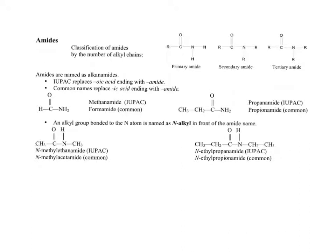Looking at amides: when we classify amides, we can classify them as primary, secondary, or tertiary, similar to what we did with amines. We find the nitrogen and determine how many carbons are coming off of it. Nitrogen attached to one carbon is a primary amide; two carbons makes it secondary; and nitrogen attached to three carbons makes it a tertiary amide.